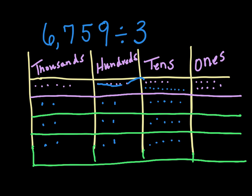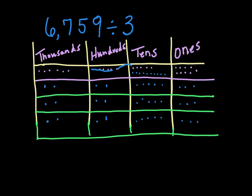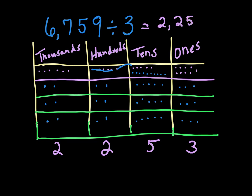We have 9 ones, and 3 goes into 9 three times. So how many do we have in each group? We have 2 in the thousands, 2 in the hundreds, 5 in the tens, and 3 in the ones. The quotient is 2,253.